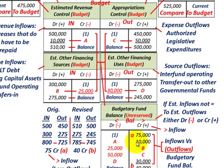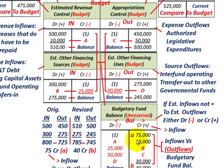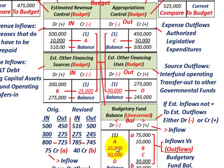Just to understand the logic here: when we increased our revenue by $10,000, our budgetary fund balance should also increase by $10,000. And when we reduced other financing sources by $25,000, that reduced our inflows by $25,000, which means our budgetary fund balance should also be reduced by $25,000.